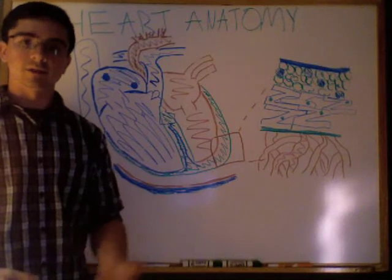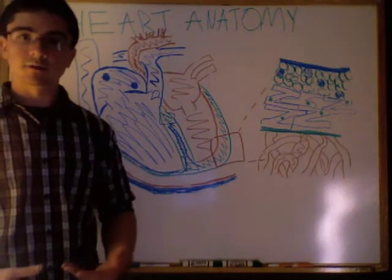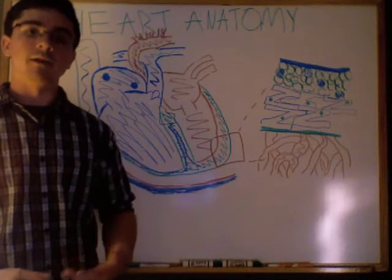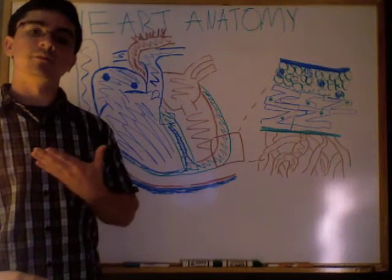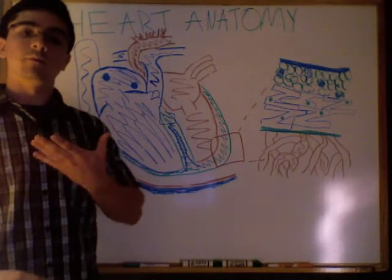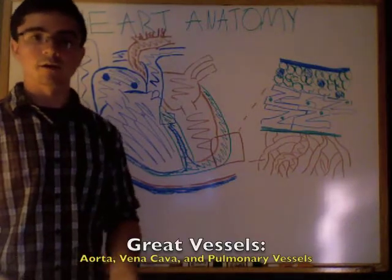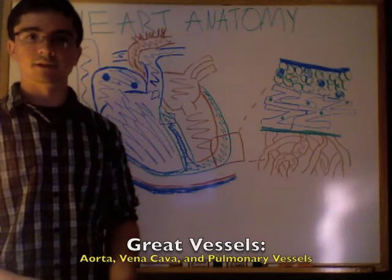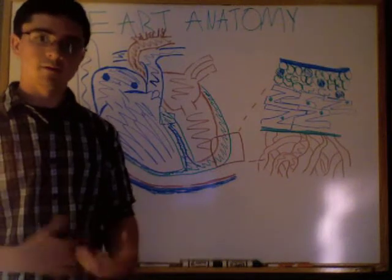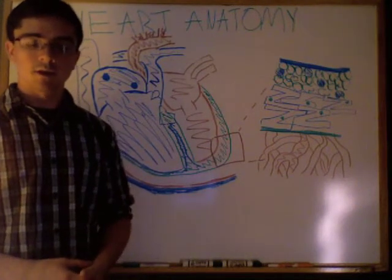The fibrous pericardium is going to protect the heart. It's what anchors the heart to the diaphragm at its inferior portion. Then there's the superior portion, which is going to align the great vessels of the heart itself and protect the actual heart along with the vessels associated with it.